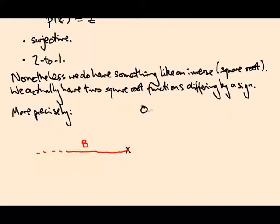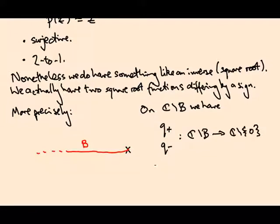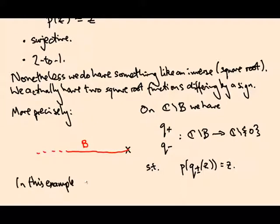Then on ℂ minus this branch cut, we have q₊ and q₋, two functions which are kind of inverses in the sense that if we take the square root and then square it, we get back to the same thing.